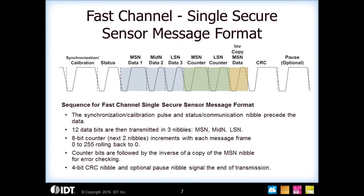The second fast channel format is called the single secure message. This one also starts with a synchronization pulse, then the status nibble, followed by 12 bits of data, then an 8-bit counter that increments from zero to all ones and then rolls over back to all zeros, the inverse of the most significant nibble, a CRC, and then a pause pulse.